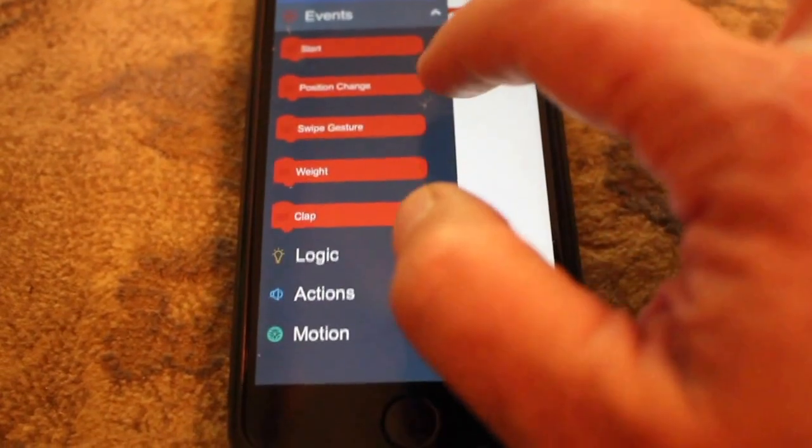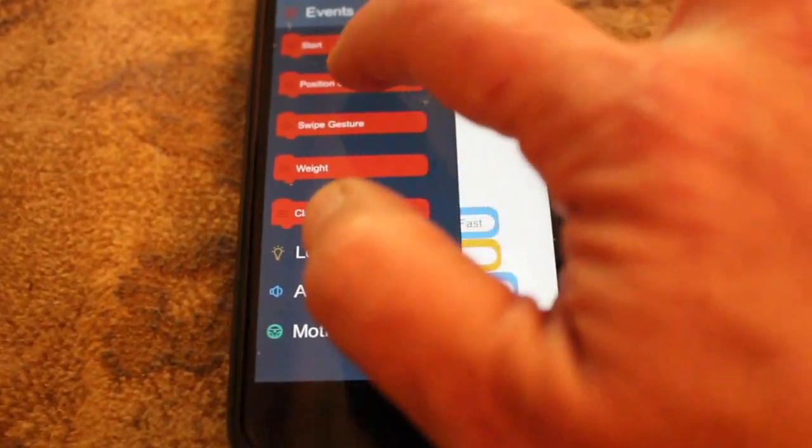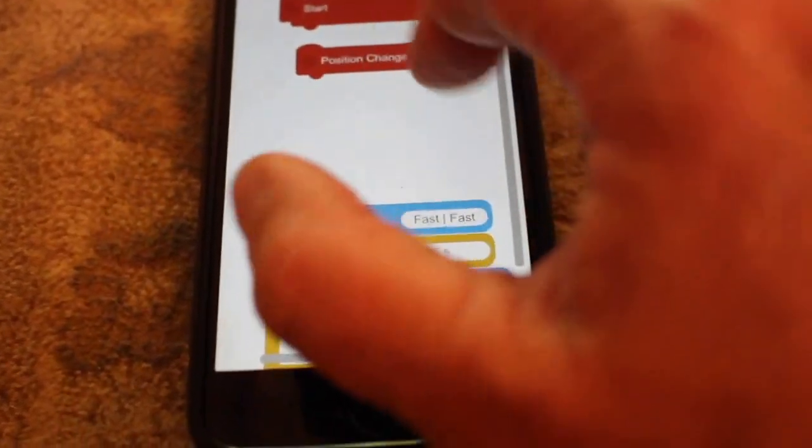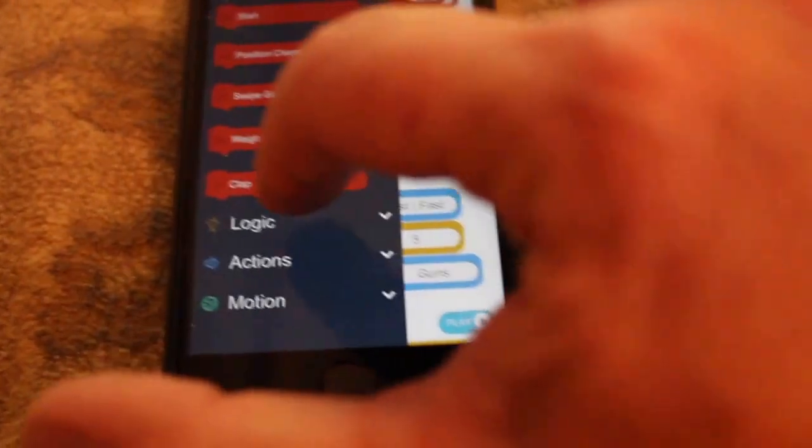So if I want him to start, I would just hold that down and drag that into my code. If I would like him to repeat an action, I can choose logic.